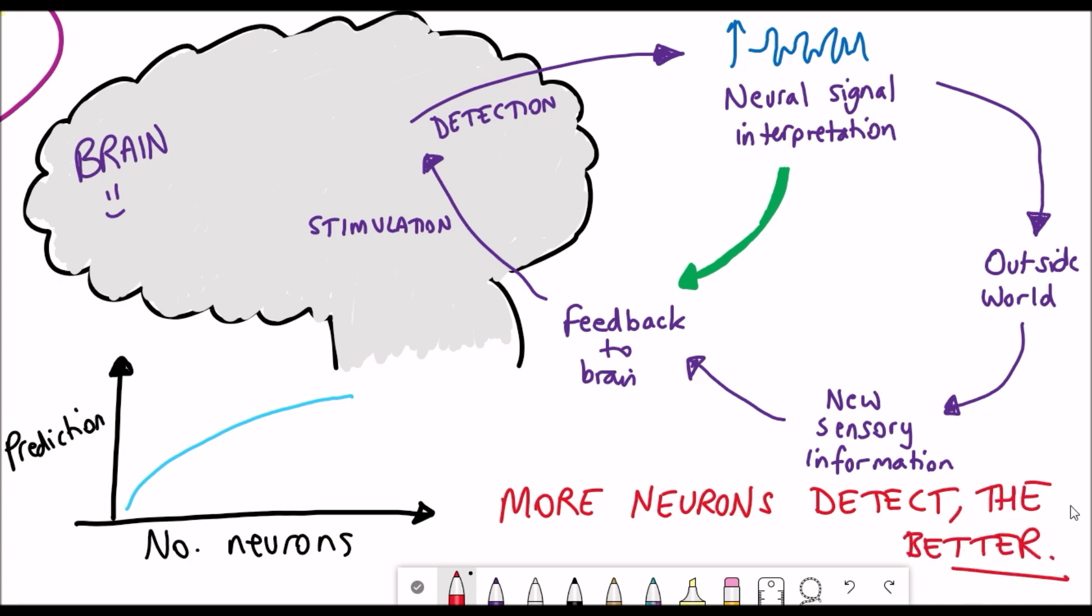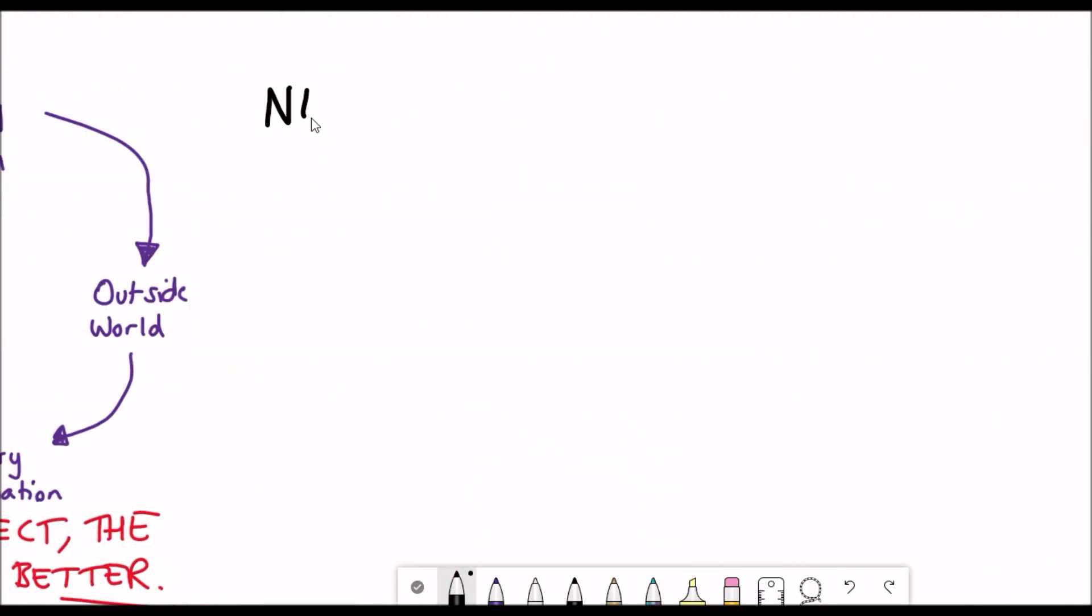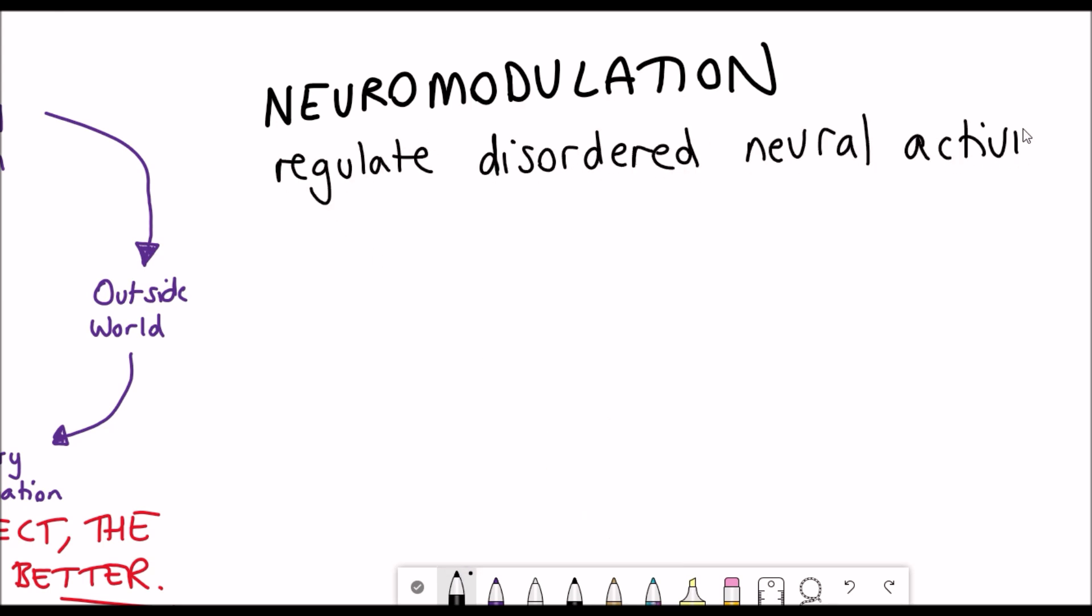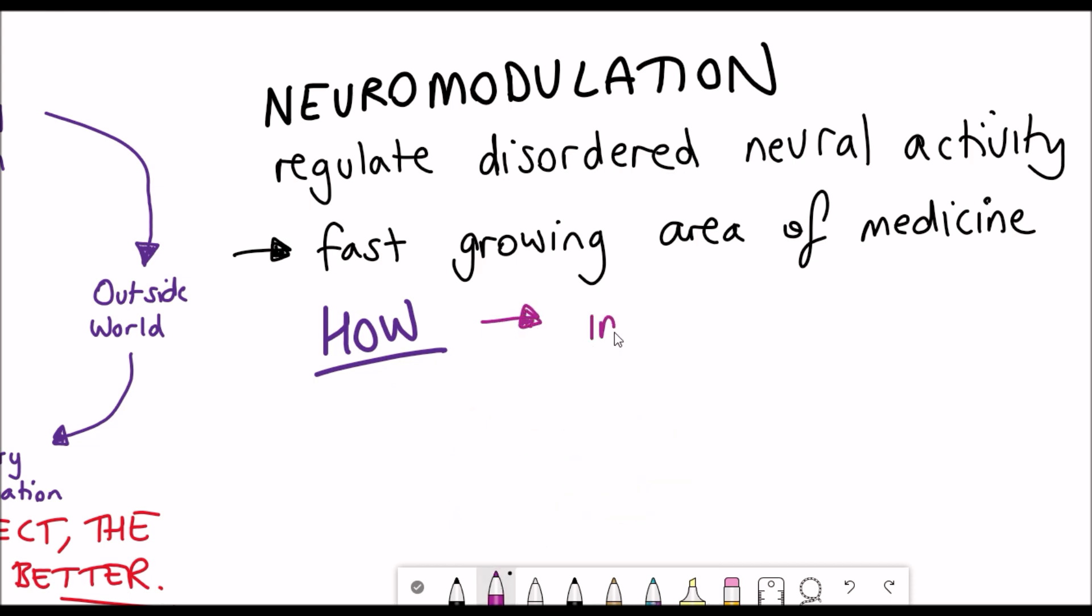The last step of these brain machine interfaces is the feedback to the brain and this is part of the field of neuromodulation and what this simply means is being able to regulate disordered neural activity and it's actually a fast-growing area of medicine and there's a lot of research in this at the moment but the big question is how?